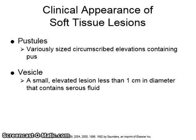Soft tissue lesions can also appear as pustules or vesicles. Pustules are variously sized, circumscribed elevations containing pus. A vesicle is a small, elevated lesion, less than one centimeter in diameter, that contains serous fluid.